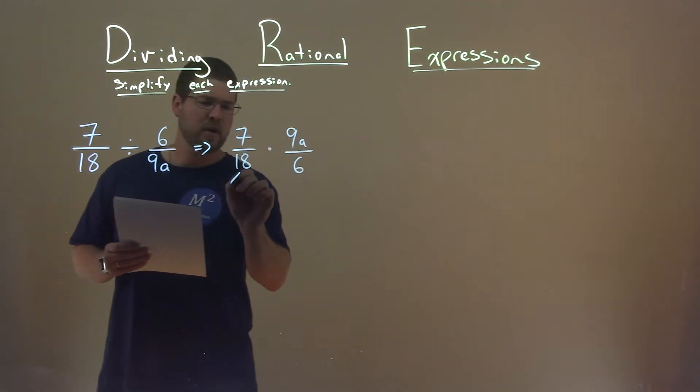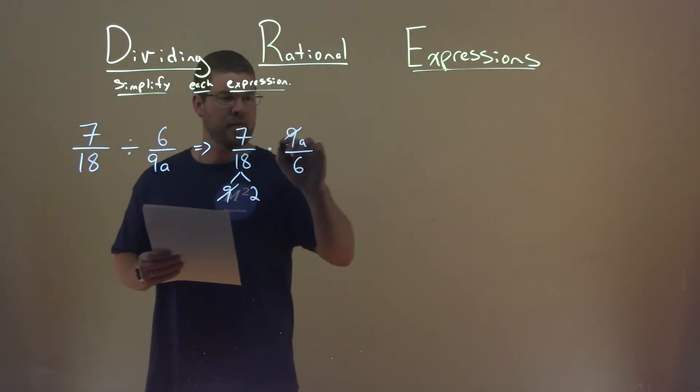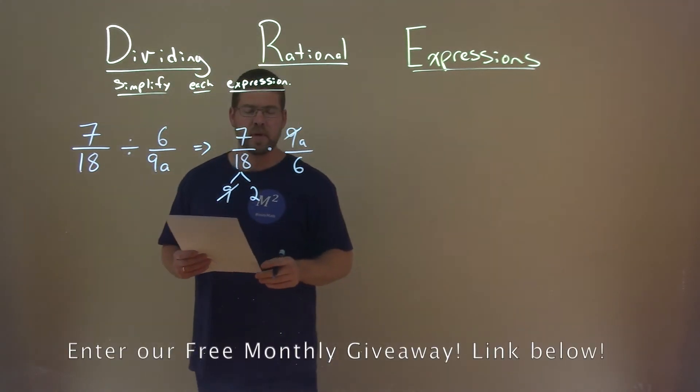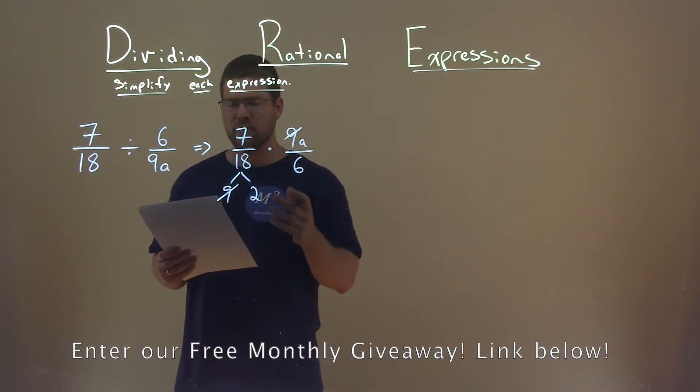Well, an 18 we know is 9 times 2. Now we can see this 9 and this 9 cancel each other out. 7 and 6 don't share any common divisors, and same with 2 here.